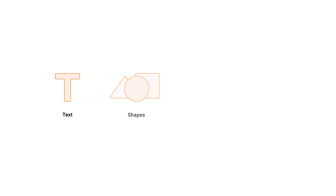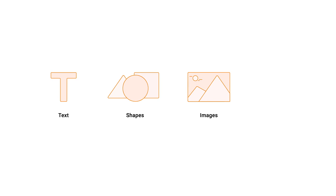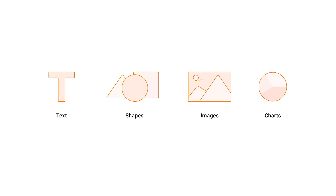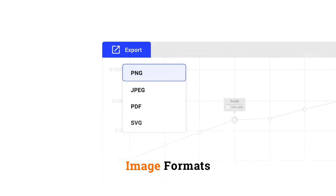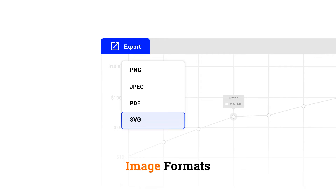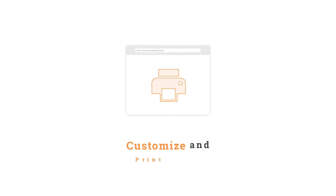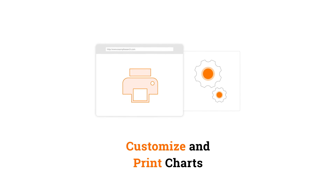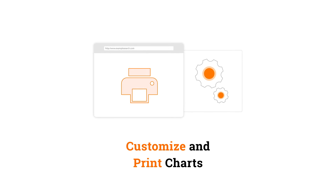The annotation feature helps to show text, shapes, images, and charts within the component. Export the chart to different image formats such as PNG, JPEG, PDF, and SVG. You can even customize and print charts from the browser.